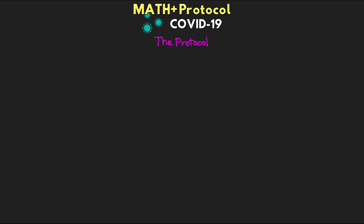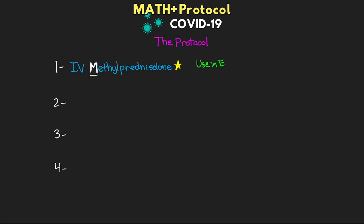The MATHPLUS protocol is an acronym for the different treatment options. It's composed of four different parts. The first is the use of IV methylprednisolone — this is where the M comes from. This corticosteroid is really key to the protocol. The use of methylprednisolone in Europe showed a reduction in mortality by 50%, and it's also recommended by China, Korea, Japan, and Italy.